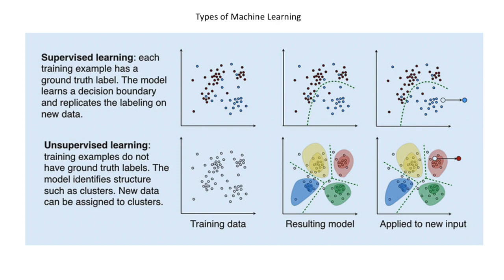Supervised machine learning involves the use of training data in which there is a ground truth label for the data. For example, if I went to work for a bank, I might want to train a machine learning model that would be able to distinguish between customers who are in good standing with their loan or in default. Good standing and default would be the two labels used to classify customers. It would be supervised because I would already have labeled these data prior to building the model, and the end goal would be to predict whether a future borrower would repay their loan or default.